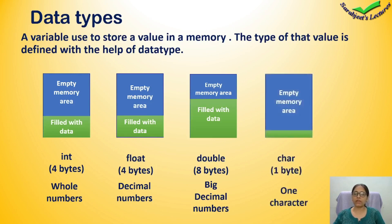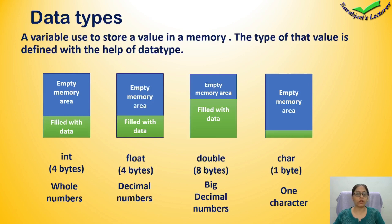The next data type is char. Its capacity is 1 byte and it can store only one character at a time. These are the basic data types, and there are many more. But if you understand these basic ones, you will be able to understand other data types as well.